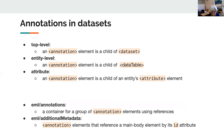There are five places in EML now that you can put an annotation. First, the annotation element can be a child of several of the main elements. At each of these, it will apply to everything below it in the hierarchy. These are at the top — what we call the resource level — and we're going to focus on dataset, plus entity and attribute.